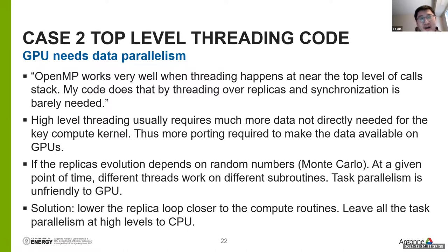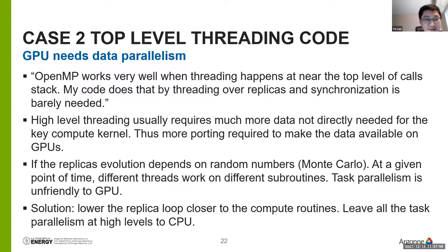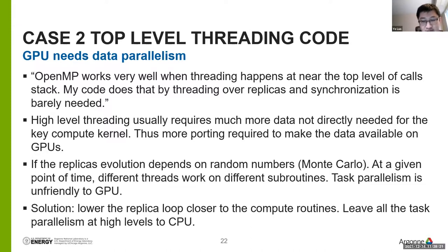Case 2: people have CPU OpenMP code using high-level threading. There are issues with directly porting high-level threading to the GPU, because high-level threading means there are many operations unrelated to the key computation that you would unnecessarily bring to the GPU. Additionally, for patterns like Monte Carlo with divergence in threading behaviors, those will not play well with GPU. You have to think about pushing those replica loops down to compute-heavy routines, leaving task parallelism at the high level for OpenMP on the CPU.